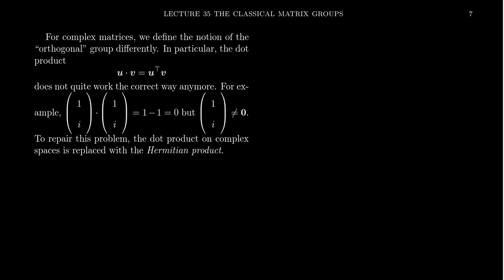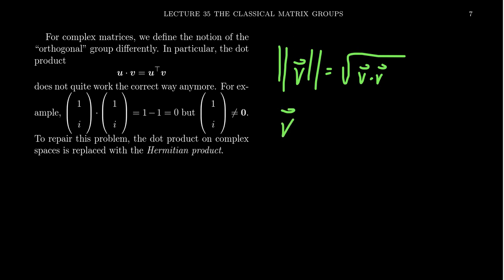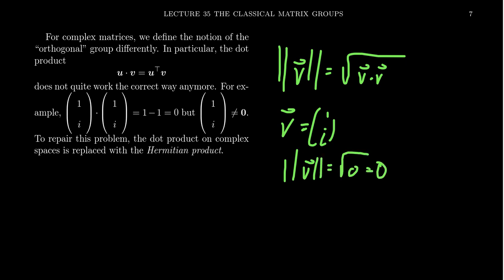This is a problem because the way we define the length of a vector in Euclidean vector spaces is: the length of v equals the square root of v·v. If v = (1, i), this would suggest the length equals the square root of 0, which is 0. This would say the vector (1, i) has zero length, but that seems counterintuitive — it should have some positive length. There's a defect in the transpose operator for complex matrices that we need to fix.